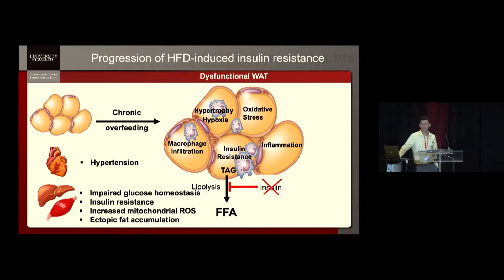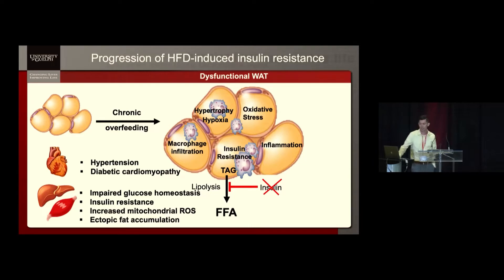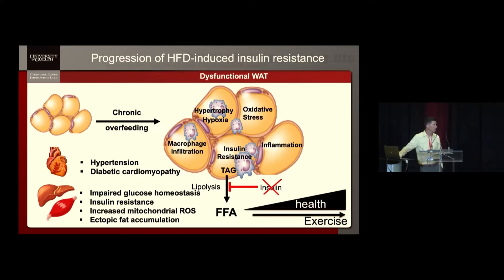While the heart is typically not associated with our discussion on insulin resistance, you can get the development of atherosclerotic lesions and hypertension, which can affect the heart. And in some instances, you can get what's called diabetic cardiac myopathy, which is the inability of the left ventricle to produce force in the absence of a change in blood pressure. Obviously adipose tissue can have pronounced effects when it's not working properly. As exercise physiologists, we typically think about exercise being beneficial and inactivity being detrimental. But in this model, there's really no mention of physical inactivity — it was really a high-fat diet perspective.